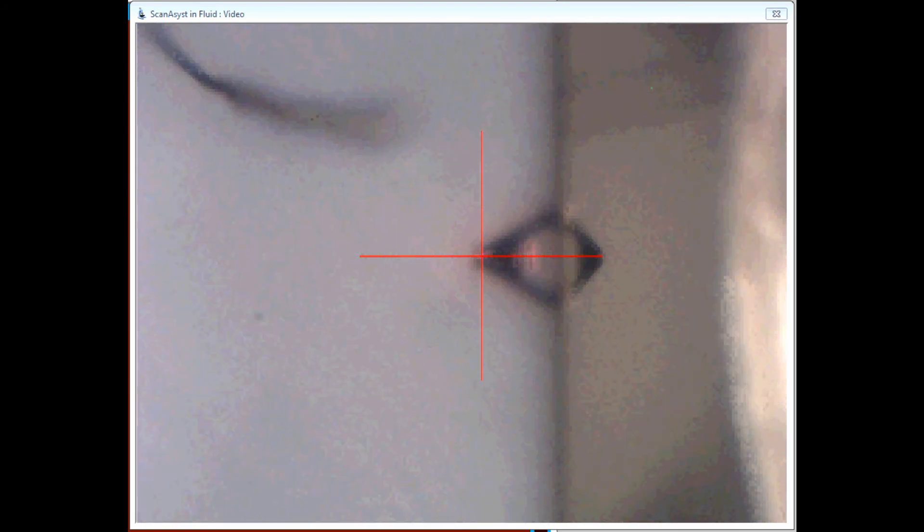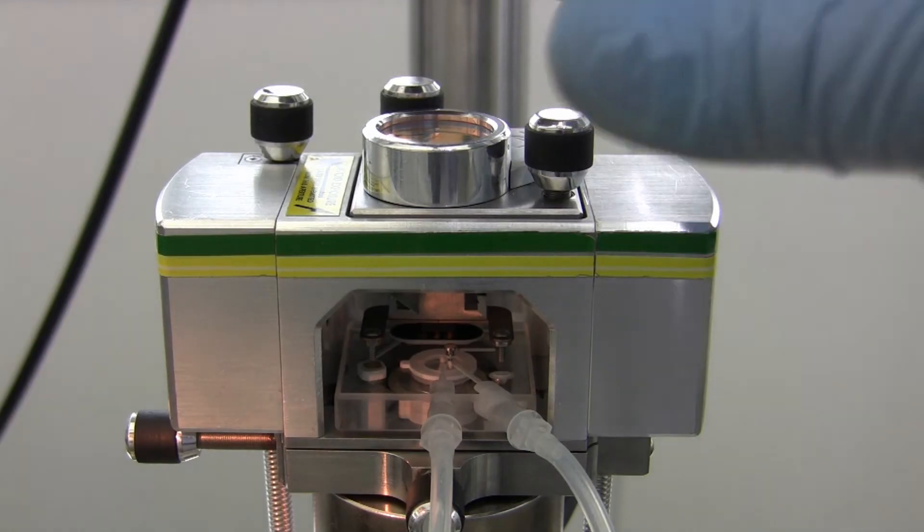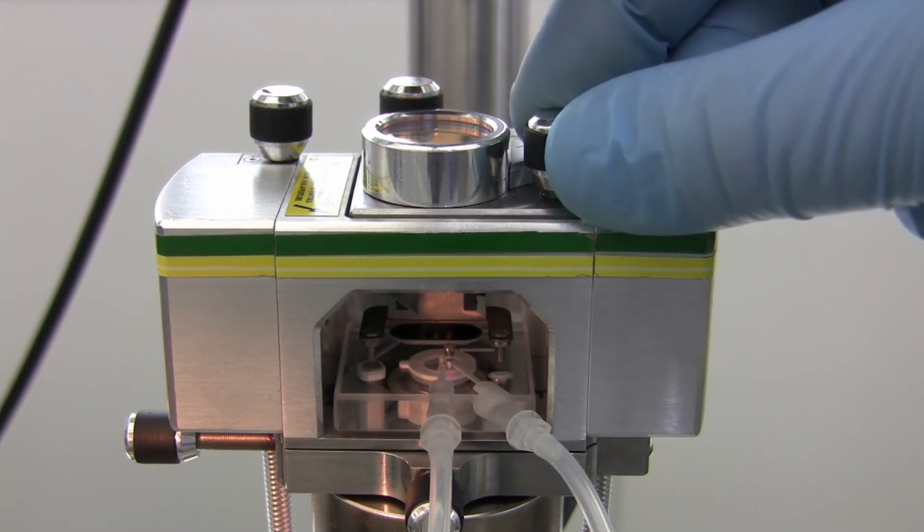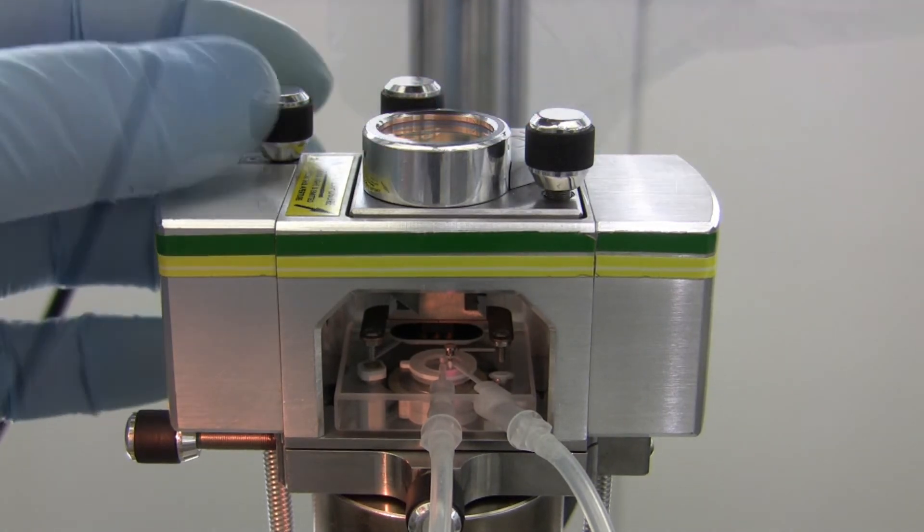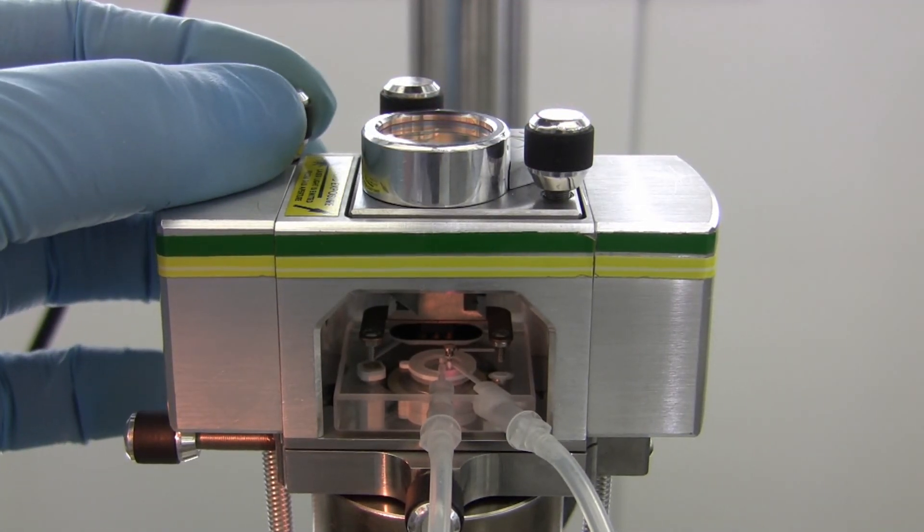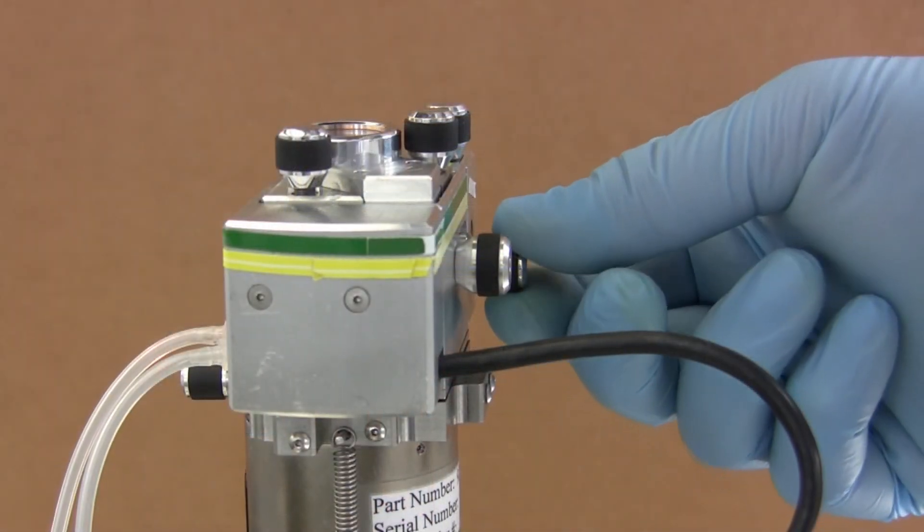The liquid environment will alter the focal point of the probe. Refocus the probe image using the camera optics focus knobs. Reposition the laser onto the probe with the adjustment knobs. Re-align the horizontal and vertical signal using the detector position knobs.